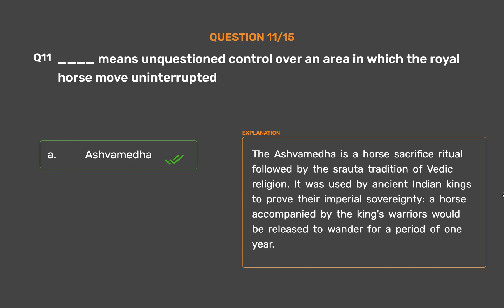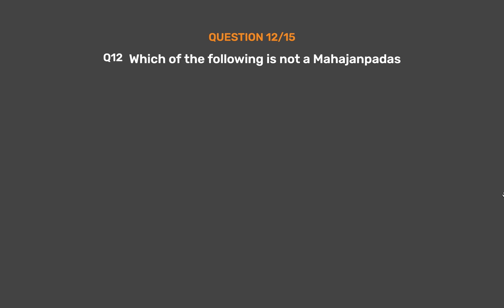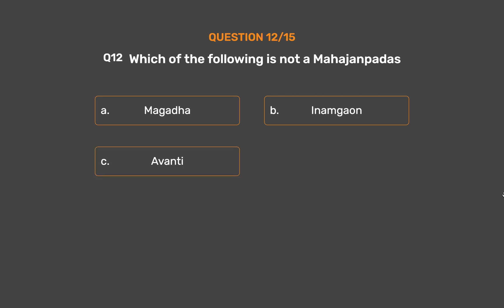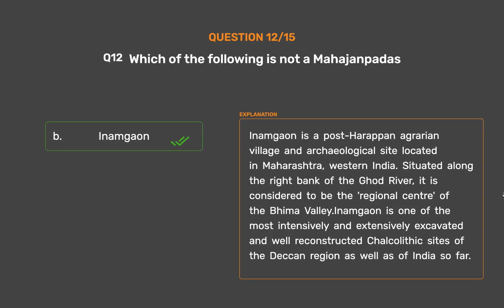Question No. 12. Which of the following is not a Mahajanapada? Option A: Magadha. Option B: Inamgav. Option C: Avanti. Option D: Kamboj. The correct answer is Option B: Inamgav. Inamgav is a post-Harappan agrarian village and archaeological site located in Maharashtra, western India. Situated along the right bank of the Ghod River, it is considered to be the regional center of the Bhima Valley and is one of the most extensively excavated Chalcolithic sites of the Deccan region.